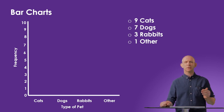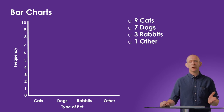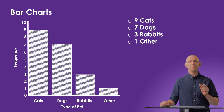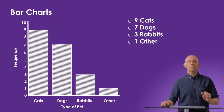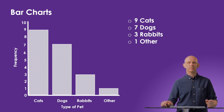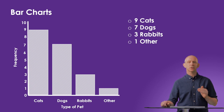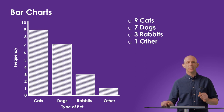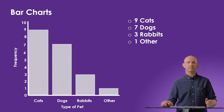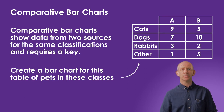We'll add the scale starting at zero and going up to 10 as the largest piece of data is 9. On the horizontal axis, consider the space available — all bars must be the same width with a consistent gap between each bar. The gaps prevent confusion with a histogram, which we'll look at in a future video. Double-check against the data table: cats equals 9, dogs equals 7, rabbits equals 3, and others equals 1. Ensure all bars are drawn as straight lines using a ruler.